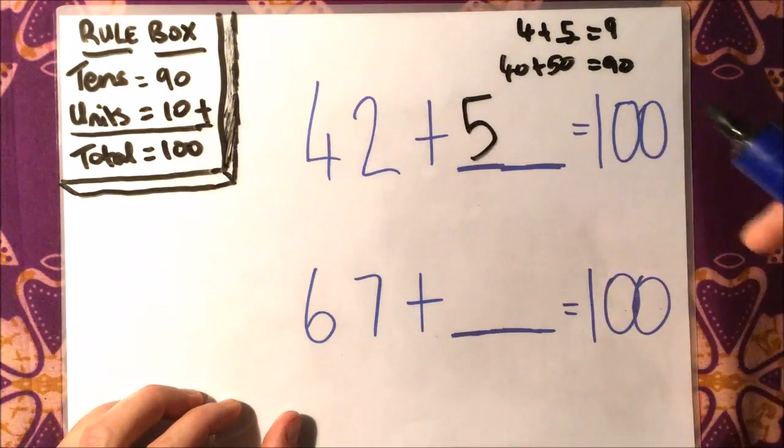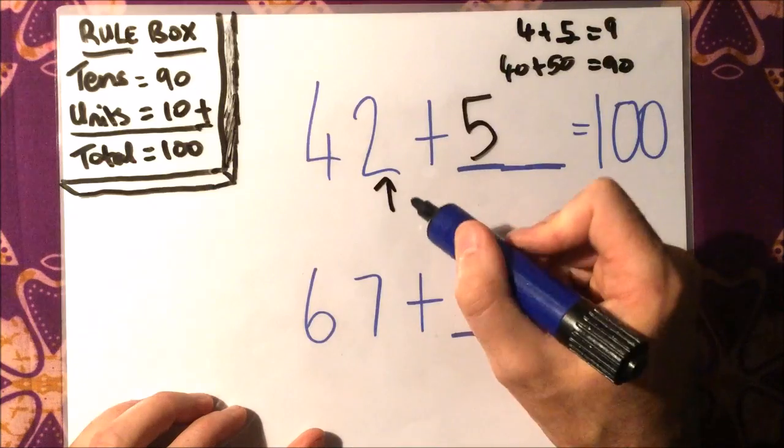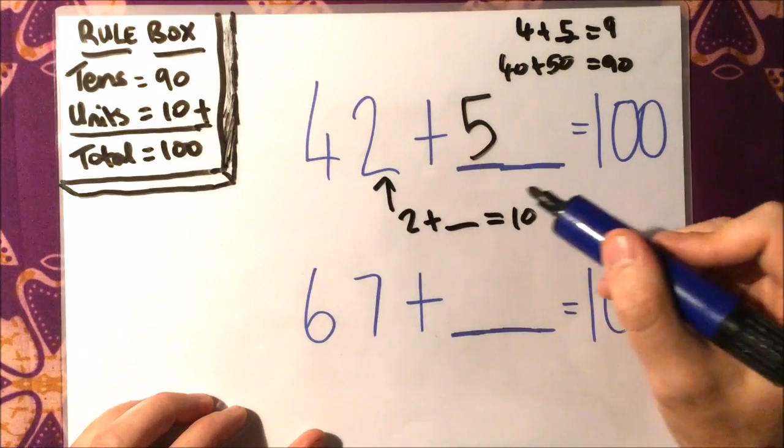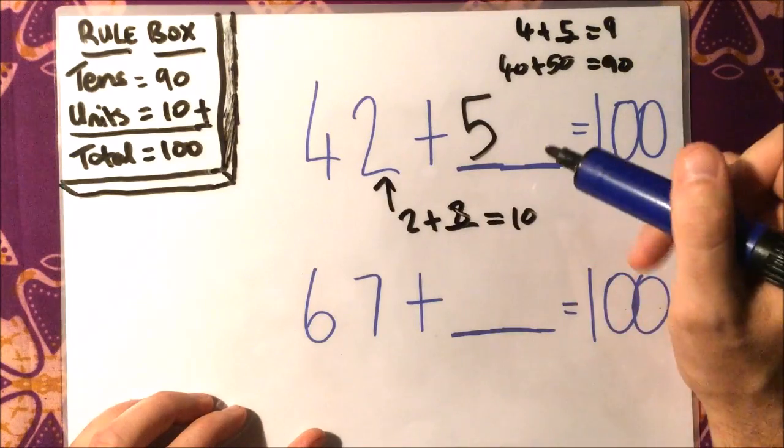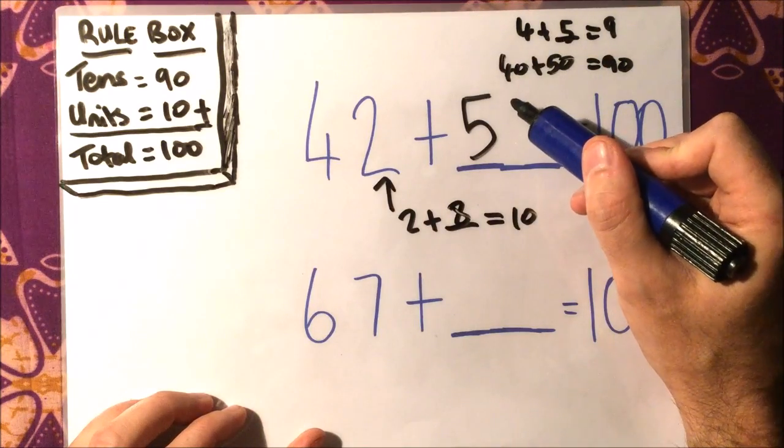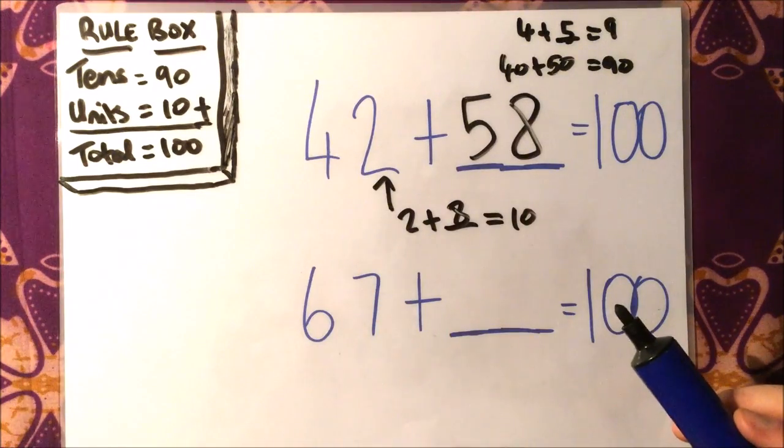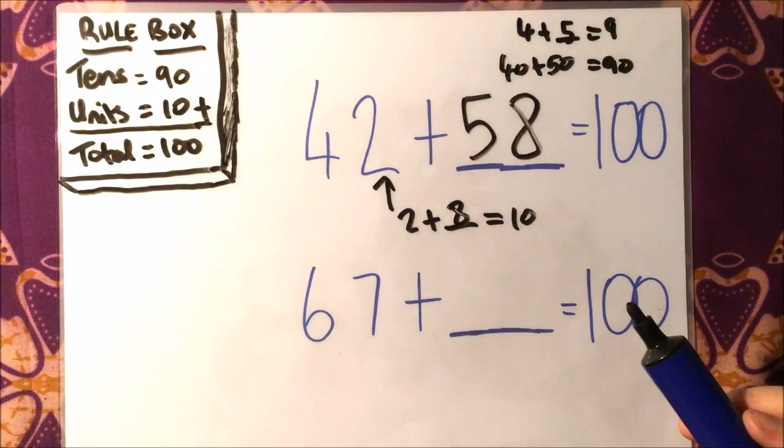Then what do I need to add to 2 to make 10? Well, straightforward, I need to add 8, so I'll put 8 units there. So 42 add 58 is 100. I'll do the same with 67.